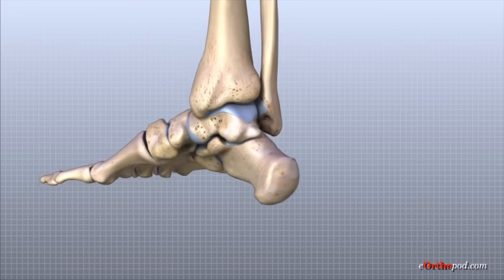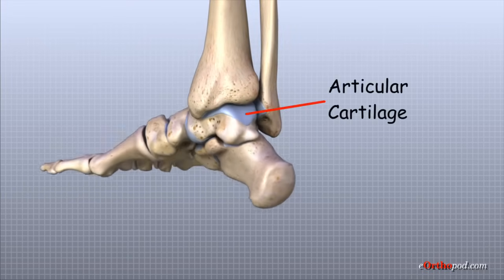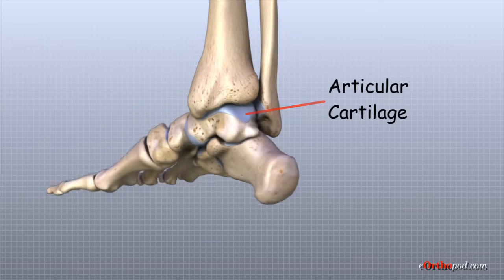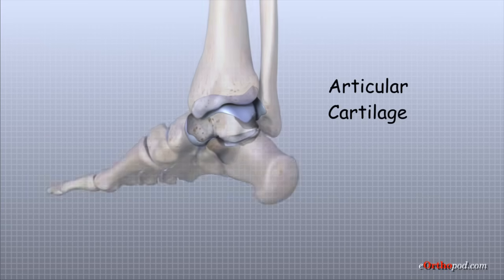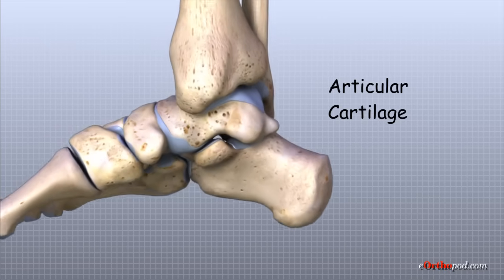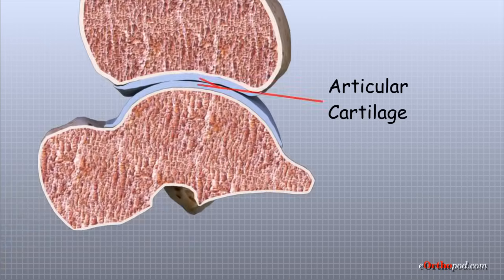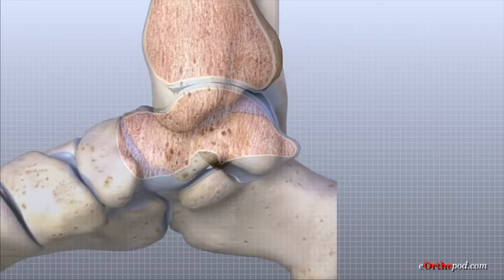Inside the ankle joint, the bones are covered with a slick material called articular cartilage. Articular cartilage is the material that allows the bones to move smoothly against one another in the joints of the body. The cartilage lining is about one quarter of an inch thick in most joints that carry body weight, such as the ankle, hip, or knee. It is soft enough to allow for shock absorption, but tough enough to last a lifetime, as long as it is not injured.